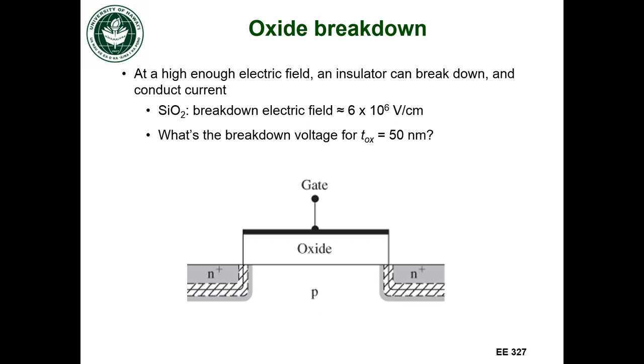So let's take a look at a numerical example. Let's say the thickness of the oxide, that's this thickness, T-ox, is 50 nanometers. So what's the breakdown voltage if that's 50 nanometers?